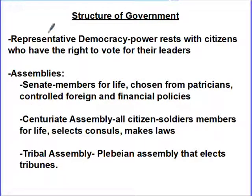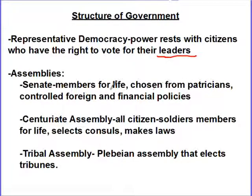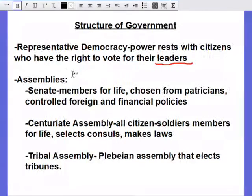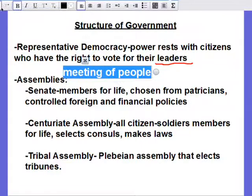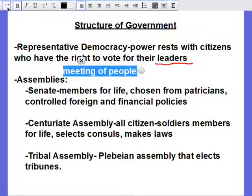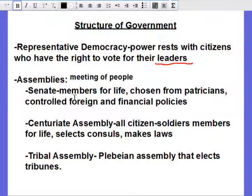How did the government work? It was a representative democracy — power rests with the citizens who have the right to vote for their leaders. The citizens would vote in their leaders, and then the leaders would make the decisions. These leaders would get together in what's called assemblies — an assembly means a meeting of people. The first type of meeting would be the Senate.